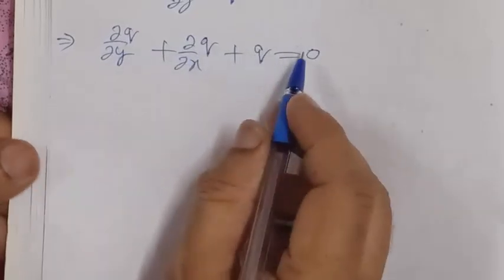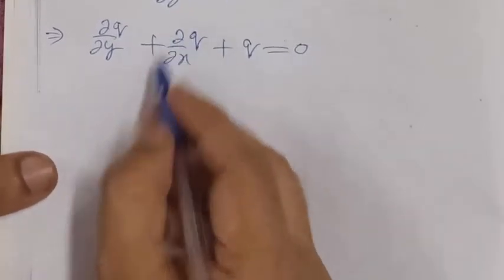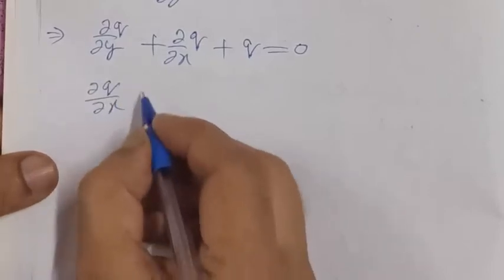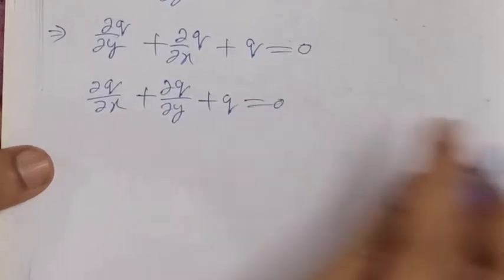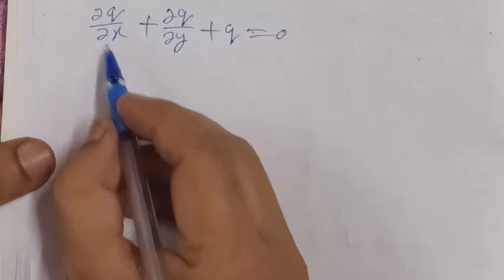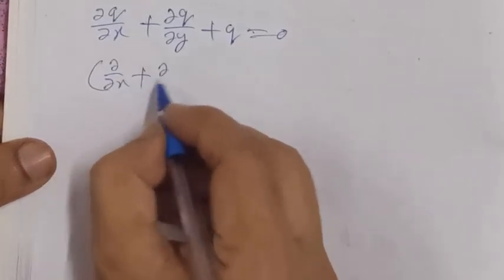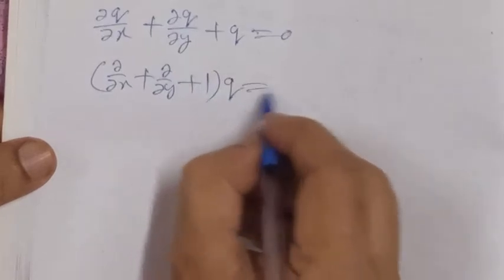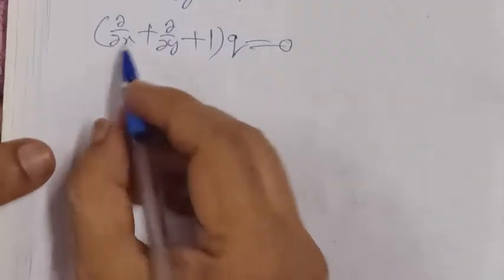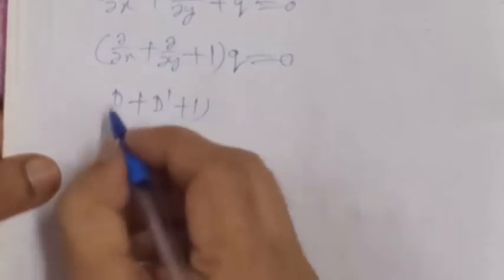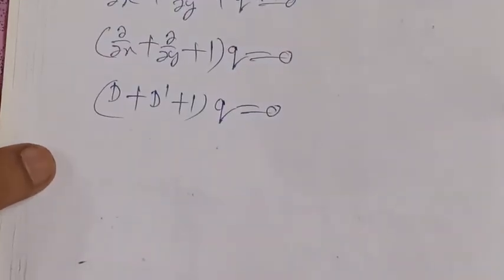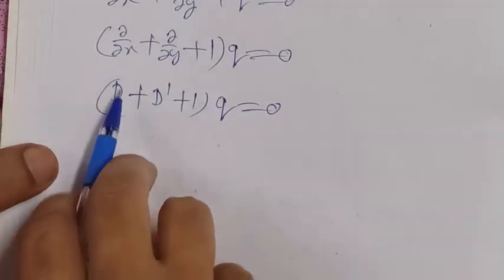Taking q common, we have del over del x plus del over del y plus one times q equals zero. This is a differential equation. Let del over del x be denoted as d, and del over del y as d dash. This is a partial differential equation, non-homogeneous, first order with maximum differentiation order one.